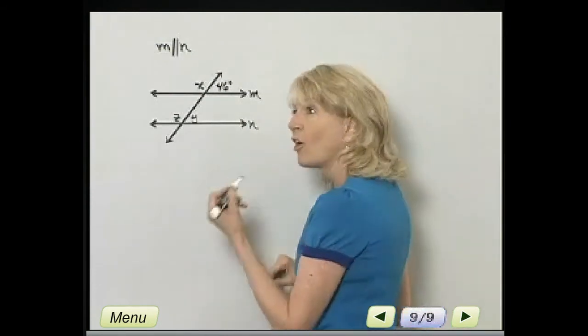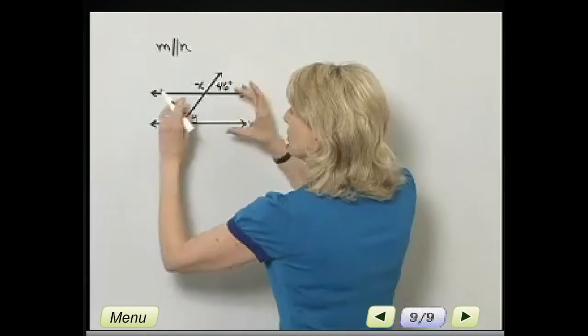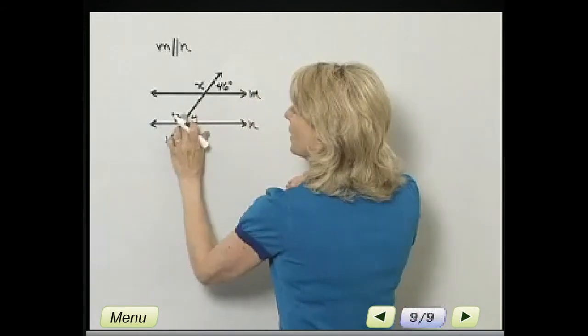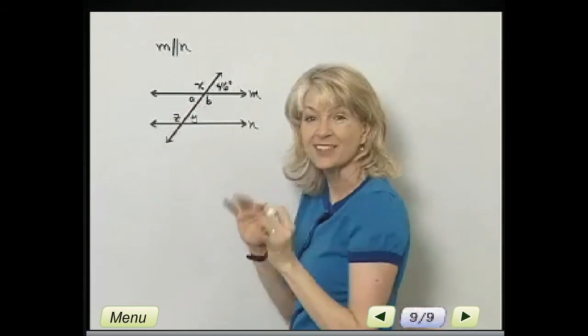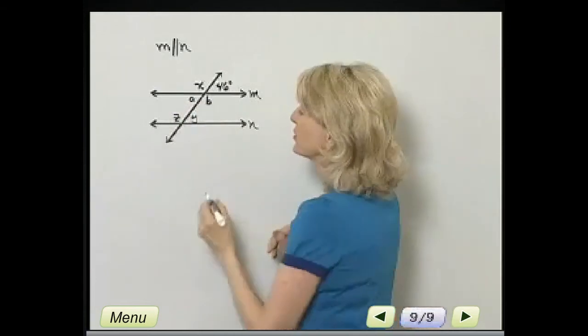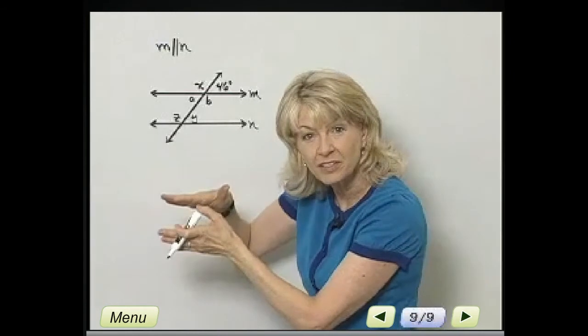And also, what do we mean by alternate interior angles? Interior, these four angles, I'm going to call this A and B, but I'm not interested in finding their angle measure. A, B, Z, and Y are what we call interior angles.